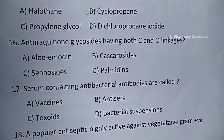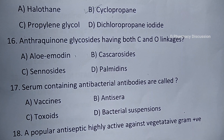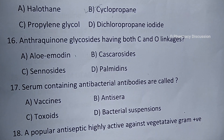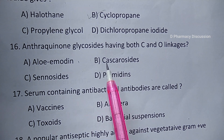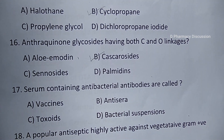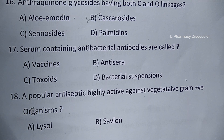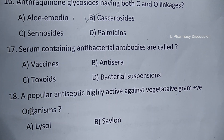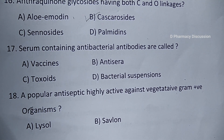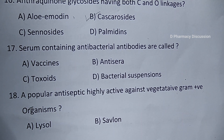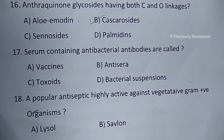Question number 16: anthraquinone glycosides having both C and O linkage. Option A. Aloe-emodin, B. Cascarosides, C. Sennosides, and option D. Frangulin. Correct answer is option B, that is Cascarosides. Question number 17: serum containing antibacterial antibodies are called — option A. Vaccines, B. Antisera, C. Toxoids, and option D. Bacterial suspensions. Correct answer is option B, that is Antisera.